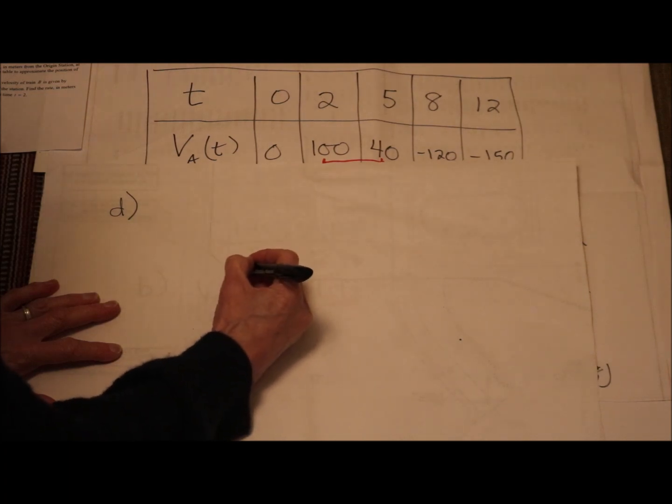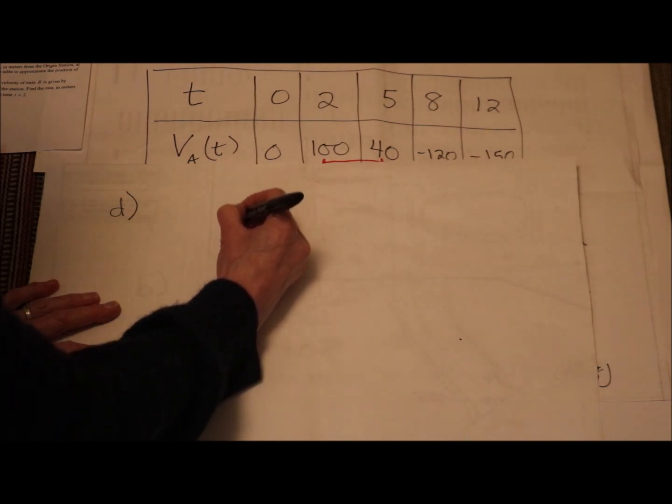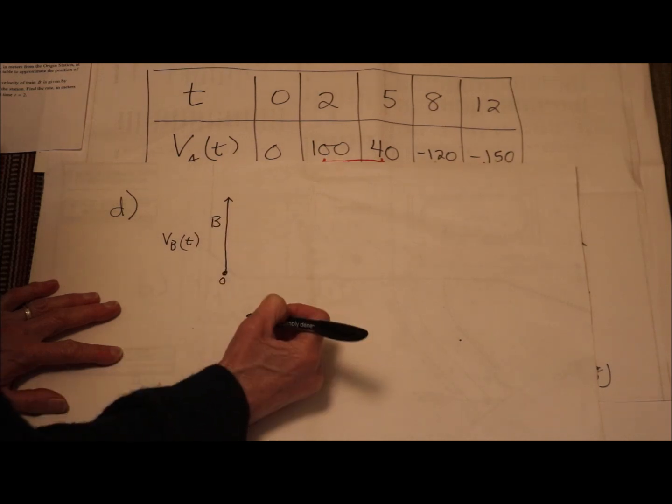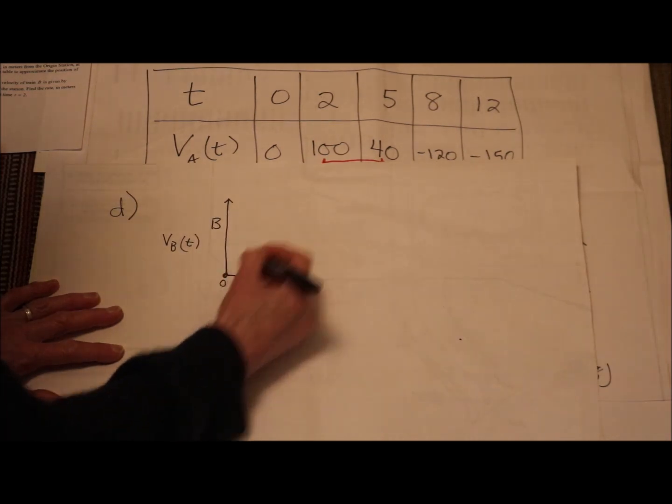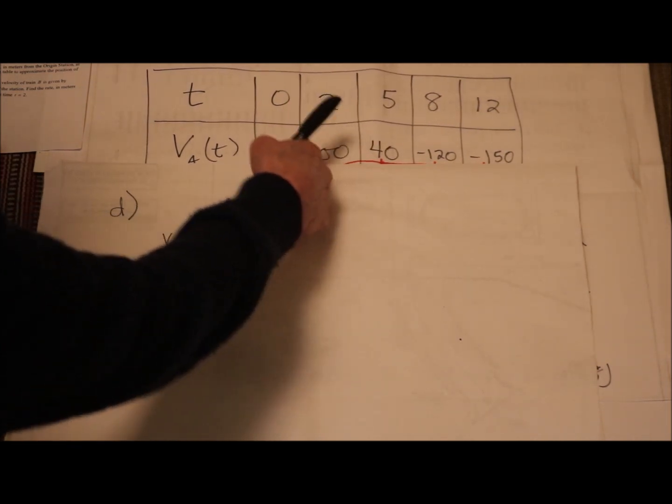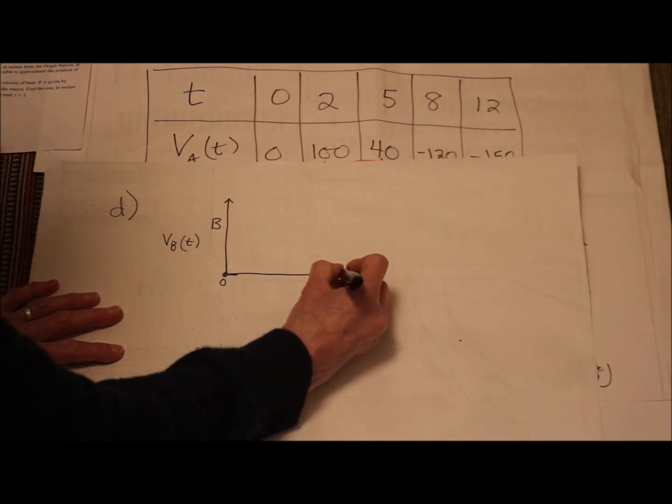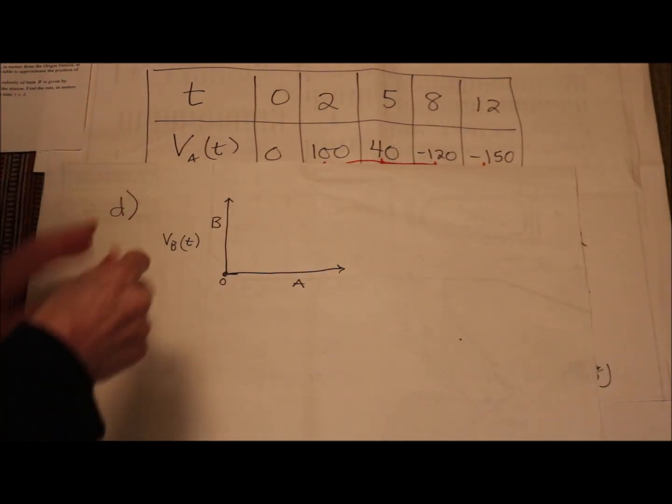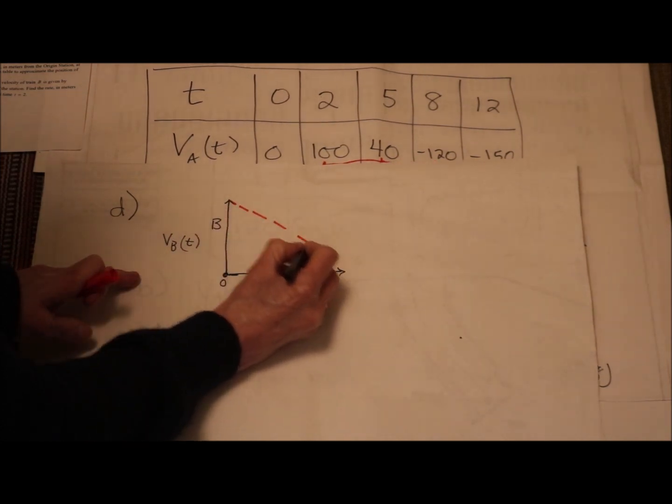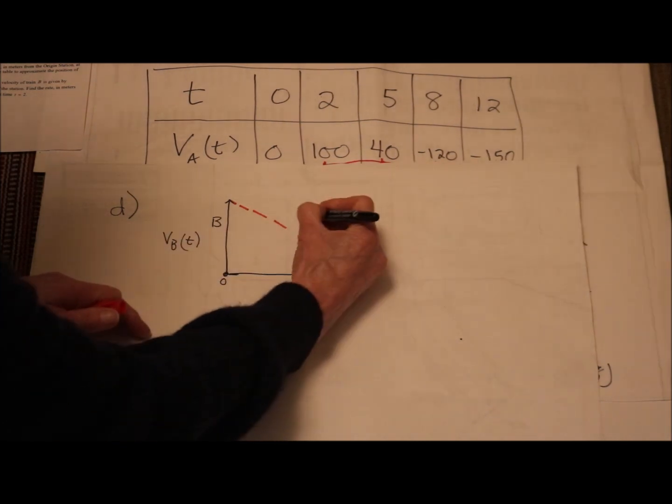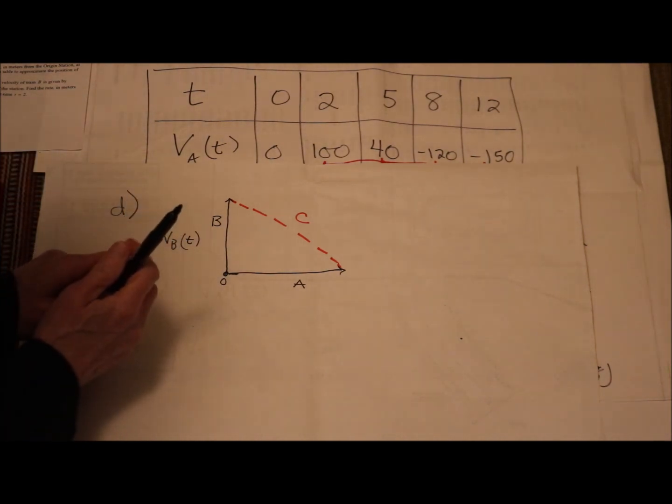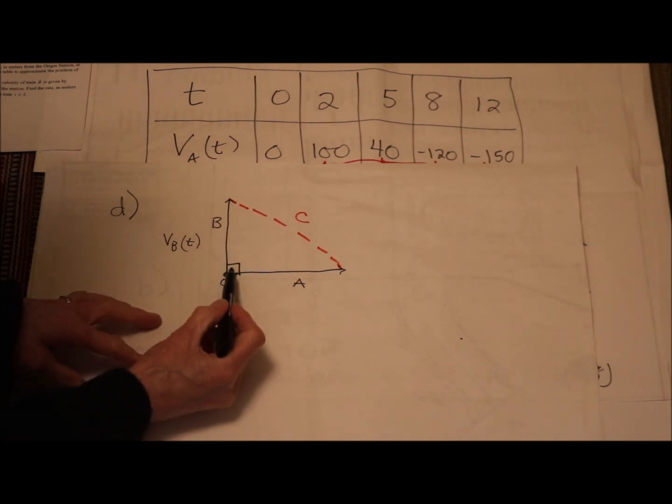So related rates, draw a picture. So here's origin station. Here's origin station. I have train B that's traveling north. And at a velocity that they're calling v sub b. My train A at this point is going east. We know that because my A train has a positive velocity. So here's A. They want to know at time equals 2 how fast is this distance changing, the distance between them. So let's call that C. So C is the distance between B and A. We're going east. We're going north. So we know we have a right angle here.